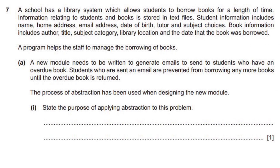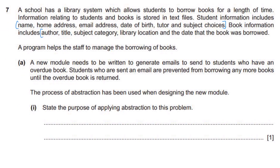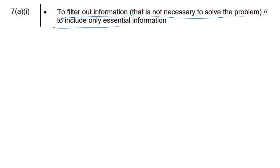We have another example that's slightly more complex. A school has a library system which allows students to borrow books for a length of time. Information relating to students and books is stored in text files. A program helps the staff to manage the borrowing of books. A new module needs to be written to generate emails to send to students who have an overdue book. Students who are sent an email are prevented from borrowing any more books until the overdue book is returned. The process of abstraction has been used when designing a new module. State the purpose of applying abstraction to this problem. Again, filter out any information unnecessary for the task — include only essential information to solve the problem.